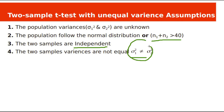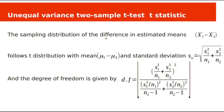This is the only difference from the previous test. The sampling distribution of the difference in estimated means, X1-bar minus X2-bar, follows a t-distribution with mean mu1 minus mu2 and standard deviation equal to the square root of S1 squared over N1 plus S2 squared over N2.